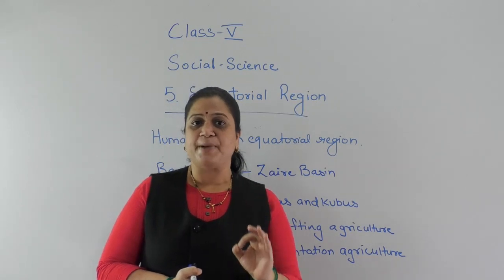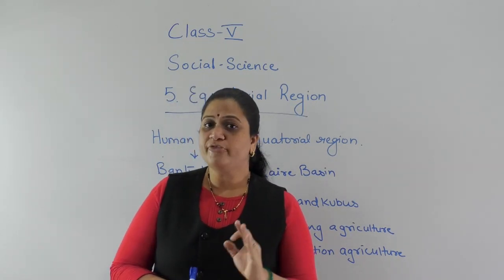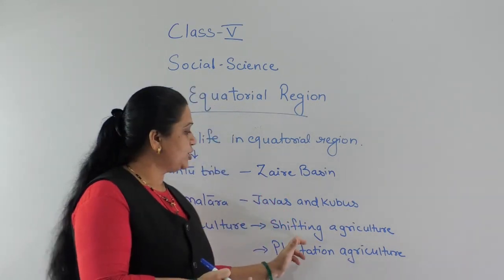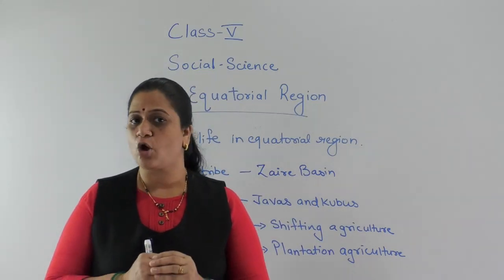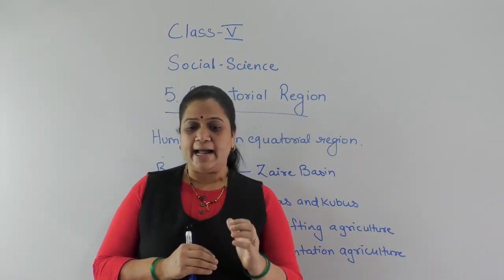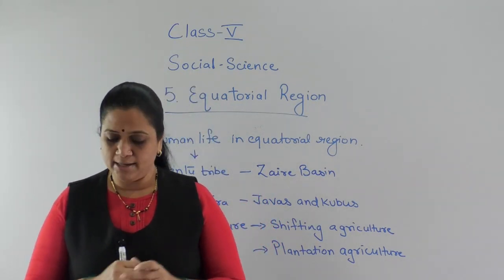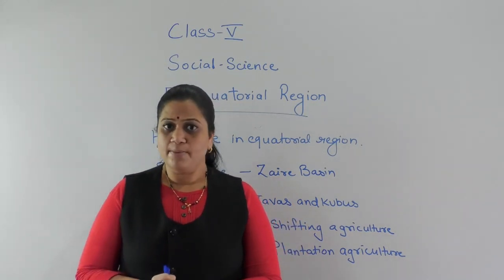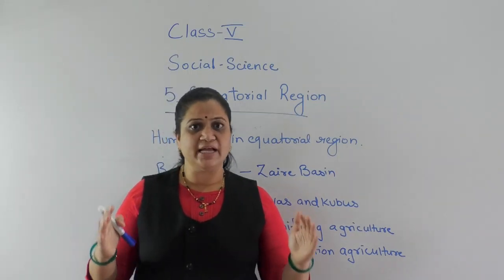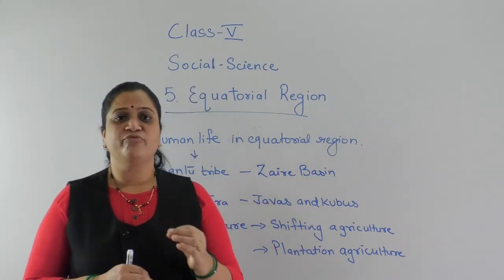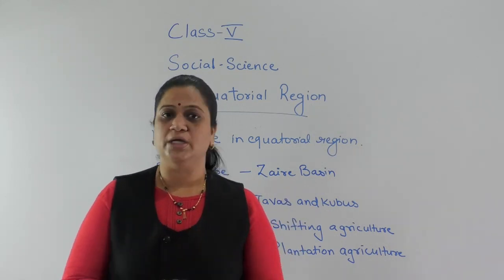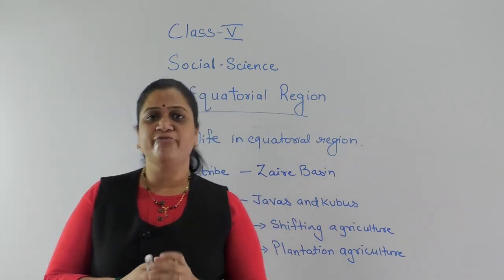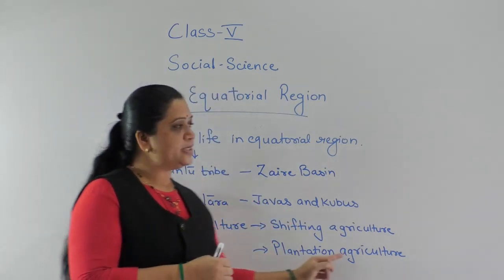The agricultural activities practiced in the equatorial region are of two types: shifting agriculture and plantation agriculture. In shifting agriculture, crops like maize, jowar, and cassava are grown after clearing a patch of forest — that is, a piece of land. After a time, when the fertility of the land diminishes, they move to another place for cultivation. This is about shifting agriculture.